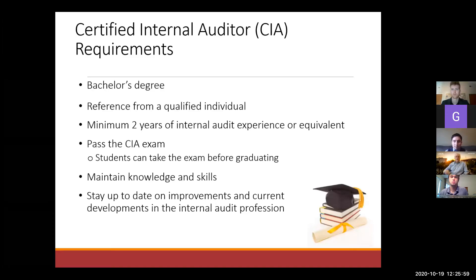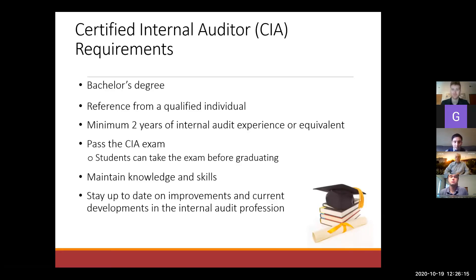Let's talk about the designation that many auditors have — it's called the CIA, Certified Internal Auditor, and it has nothing to do with the spy agency. You need a bachelor's degree, a reference, a minimum of two years of experience, and you have to pass the exam and maintain your knowledge. The interesting thing about the CIA exam compared to the CPA exam is you can sit for it while you're still a student — you pass the exam, then get your required experience, and then become certified.